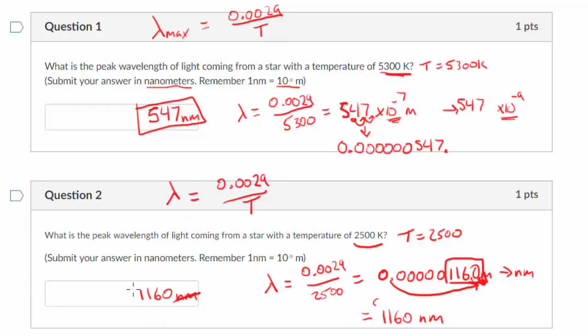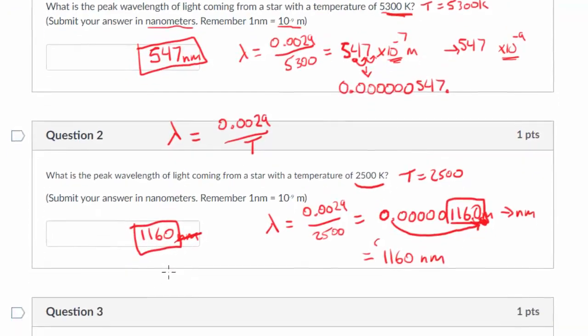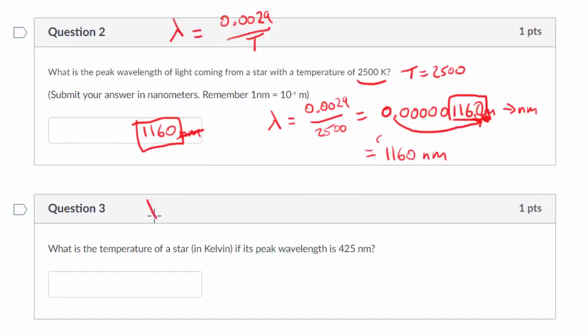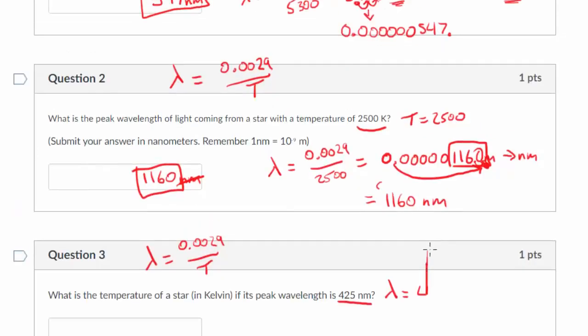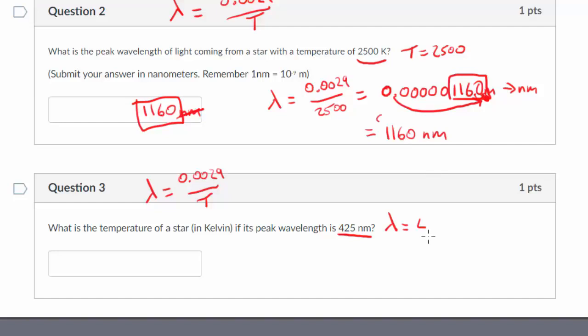All right, let's look at question three. You'll notice that the answer is in that ballpark we would expect, of a few hundred to a few thousand. The temperature now it's asking us. So we have the same equation, lambda equals 0.0029 divided by temperature. But now it's asking us for the temperature of the star if the peak wavelength is 425 nanometers.